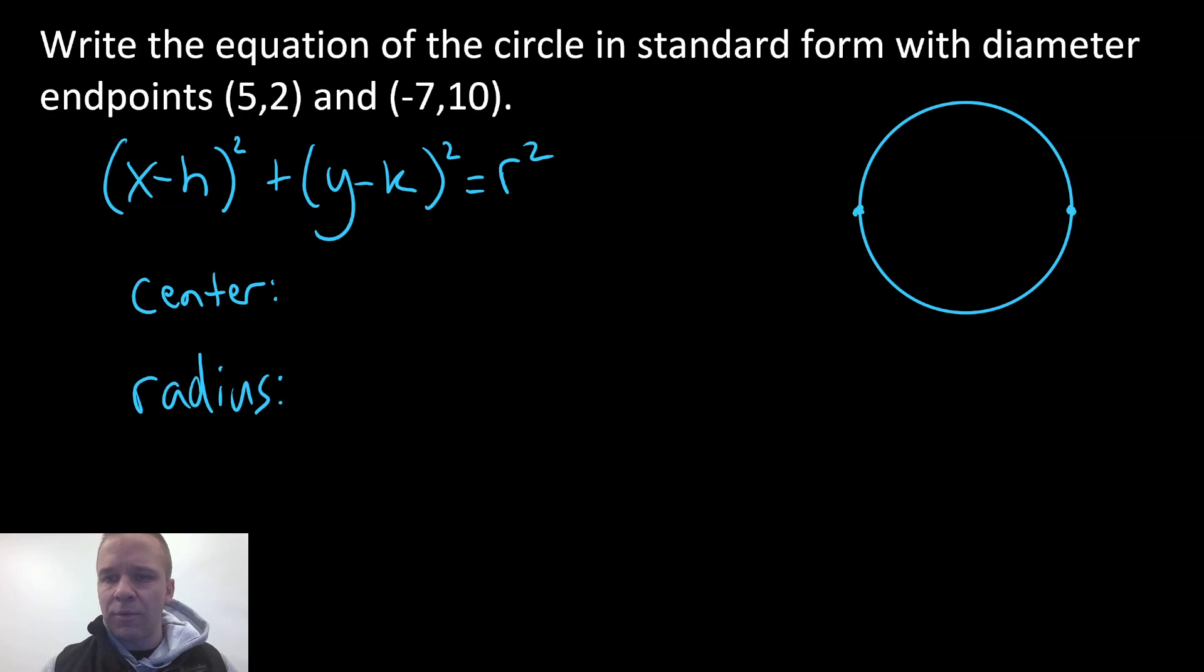All right, and I don't care really where these endpoints are, as long as they're going through the center, right? I'd have (5,2), and I'm gonna have (-7,10). Those are clearly switched around, but whatever, just picture.